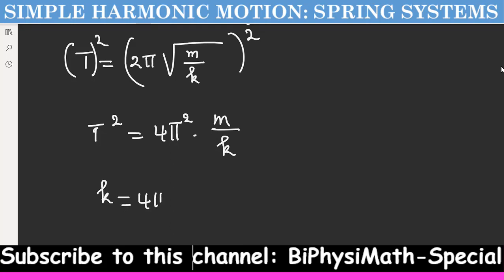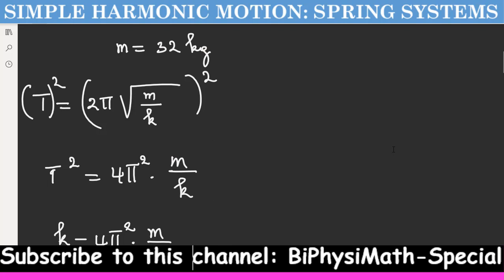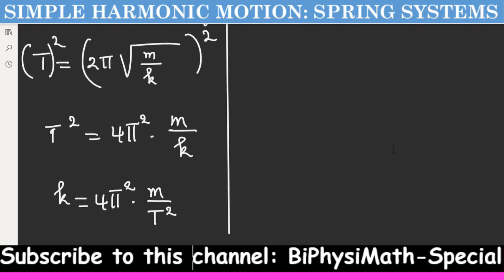T squared times K over M, so we need to rearrange the equation. Continuing, we need to change their places to get the expression.